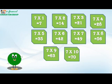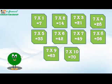I repeat, Table of 7. 7 times 1 is 7. 7 times 2 is 14. 7 times 3 is 21. 7 times 4 is 28. 7 times 5 is 35. 7 times 6 is 42. 7 times 7 is 49. 7 times 8 is 56. 7 times 9 is 63.